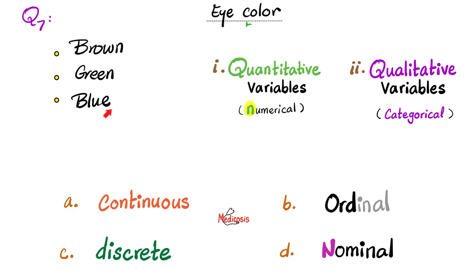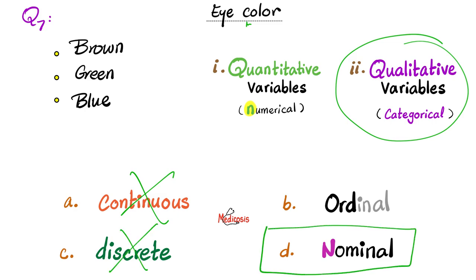Next, eye color. We have brown, we have green, we have blue. Quantitative or qualitative. What do you think? These are qualitative variables. Can you order them? No, I cannot. So therefore nominal. If you want to see more videos like this in the future, please drop an eye emoji in the comments.